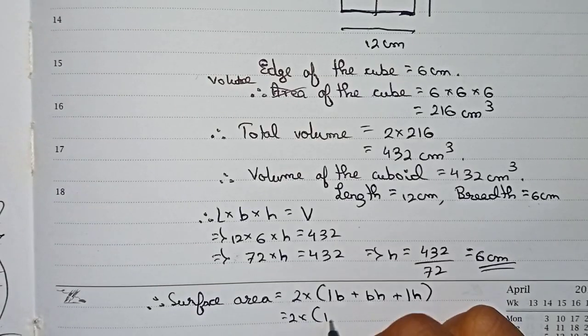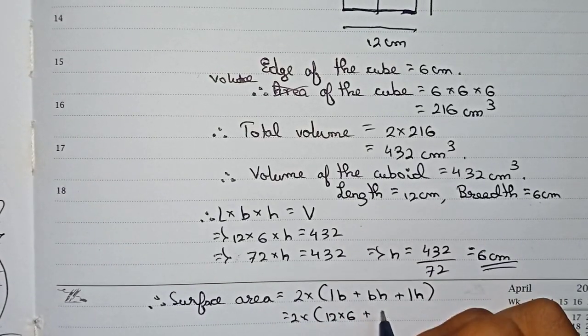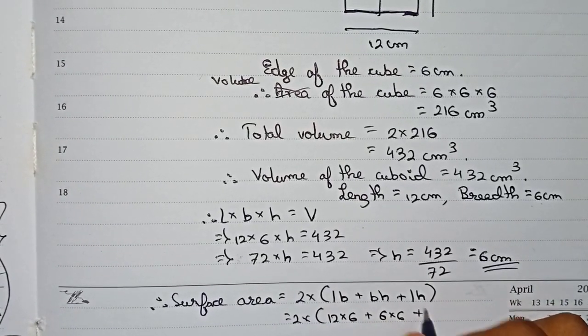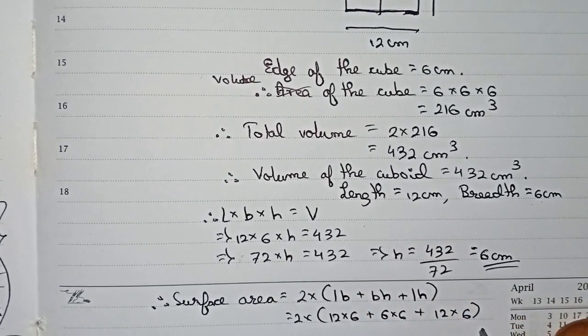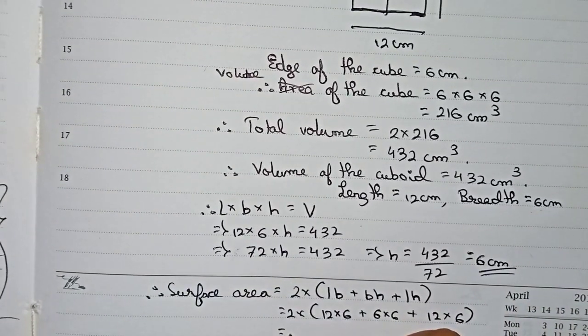Put down the values: 2 into 12 into 6, plus 6 into 6, plus 12 into 6. So I have put down the values, just you have to multiply it now.